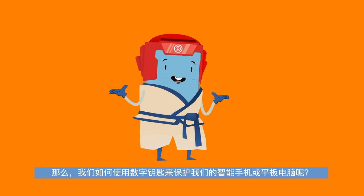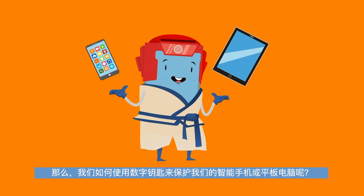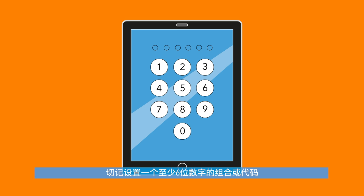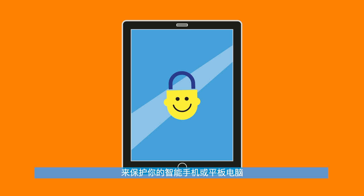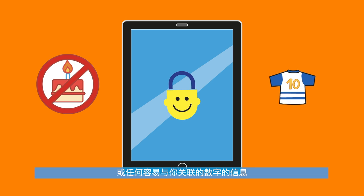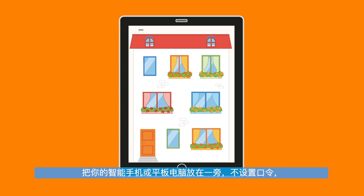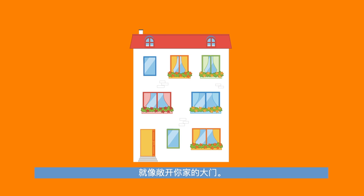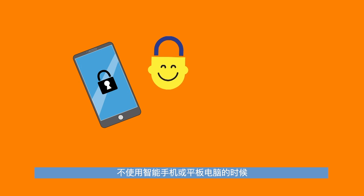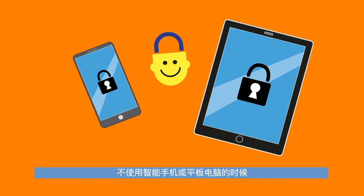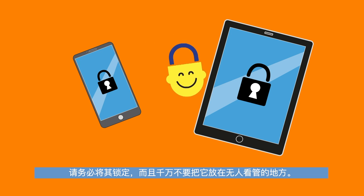So how can we use our digital key to protect our smartphones or tablets? Remember to set a combination or a code of at least six digits to block your smartphone or tablet, and try to avoid using information about your date of birth or any number that can be easily associated with you. This information would be easy to guess. Leaving your smartphone or tablet around without a code is like leaving the door to your house open. Always lock your smartphone or tablet when you are not using it and never leave it around unattended.